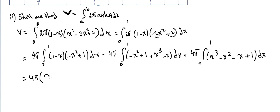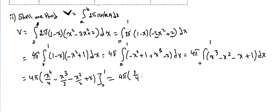Let's find the integration now. 4π times [x⁴/4 minus x³/3 minus x²/2 plus x] from 0 to 1. We substitute 1, since substituting 0 gives 0 because all terms are in x. So it's 4π multiplied by (1/4 minus 1/3 minus 1/2 plus 1). Common denominator is 12.